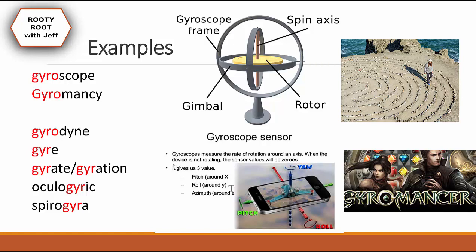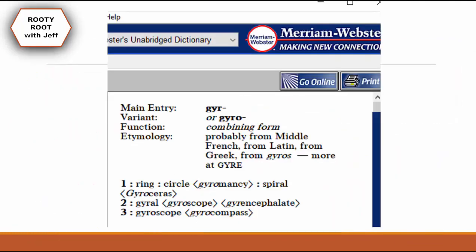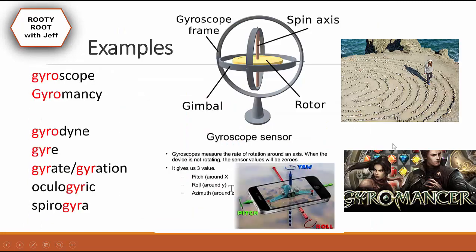The second word, Gyromancy, is divination by rings, circles, or spirals. As you can see, we have a picture of that — looks pretty cool, looks like a thumbprint. And there's also a game called Gyromancy; I've never played it. Comment down below if you've actually played that.